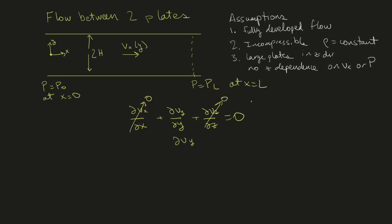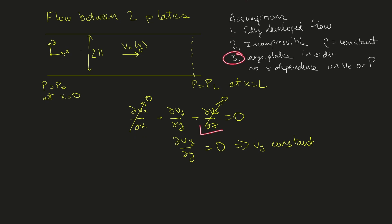What we're left with is dvy/dy = 0, meaning the velocity in the y direction is a constant. We can determine that constant from the geometry: the flow at the wall in the y direction must be zero, so the flow throughout the entire region between the two plates must also be zero. Therefore vy = 0 throughout.